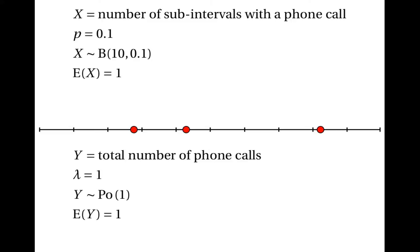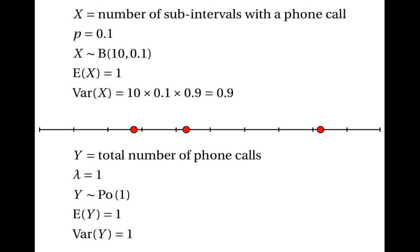We would expect, therefore, that the binomial distribution with parameters 10 and 0.1 should be similar to the Poisson distribution with parameter 1. They won't be exactly the same — we can tell that by thinking about the variances, because the variance of x here will be 10 times 0.1 times 0.9, which is 0.9, whereas the variance of y will be lambda, which is 1. So they won't be exactly the same, but we should expect the binomial distribution with parameters 10 and 0.1 to be roughly the same as the Poisson distribution with parameter 1.